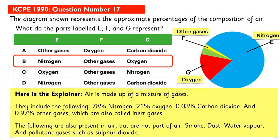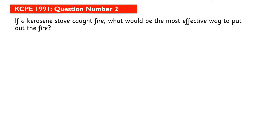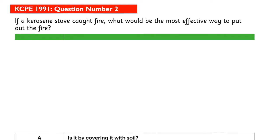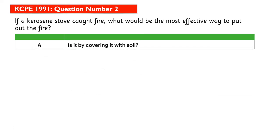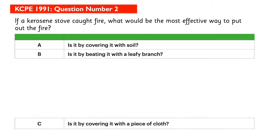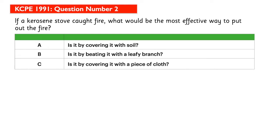If a kerosene stove caught fire, what would be the most effective way to put out the fire? Is it by covering it with soil, by beating it with a leafy branch, by covering it with a piece of cloth, or by pouring water over it?